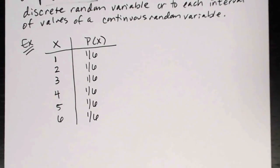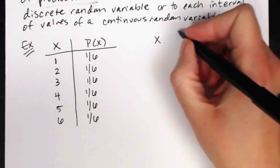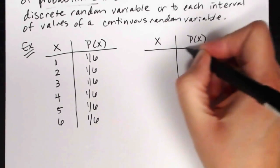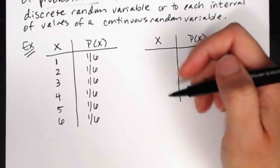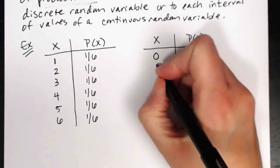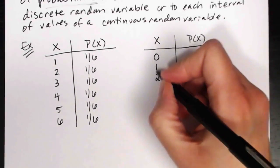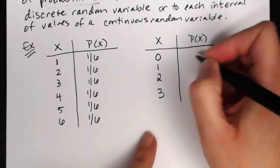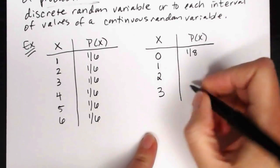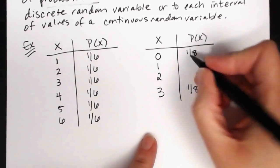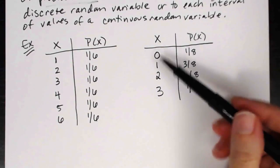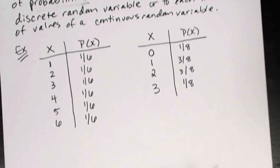Similarly, if a family has three children and we're interested in the number of boys, the possible outcomes are zero, one, two, or three boys. Zero boys has a one-in-eight chance, three boys also has a one-in-eight chance, while one boy and two boys each have a three-in-eight chance. That's the probability distribution for that scenario — all outcomes listed with their probabilities attached.